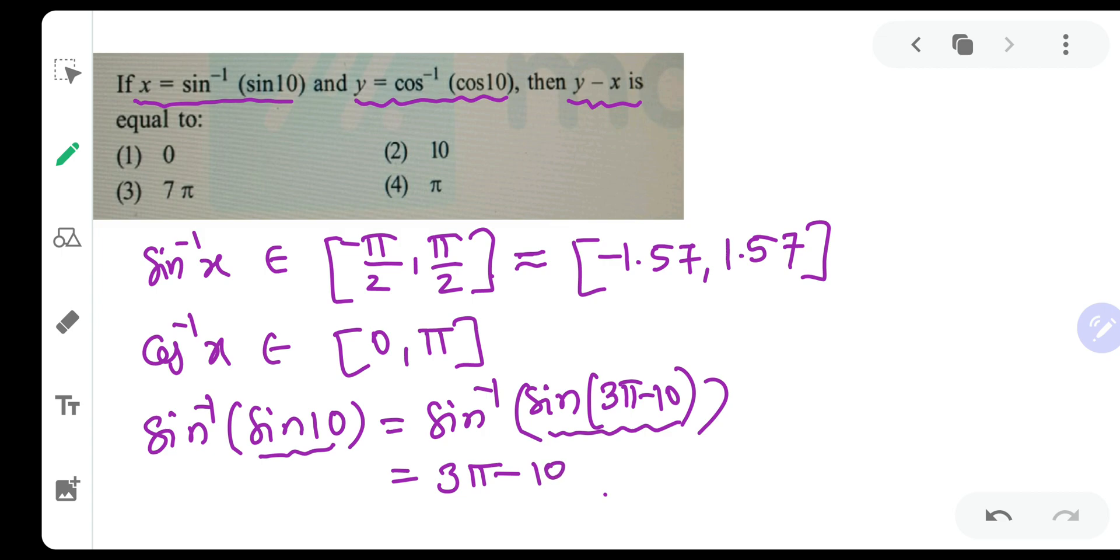Now check 3 pi minus 10 whether this lies in the range. Pi is approximately 3.14, so this will be approximately 9.42 minus 10 which will be approximately minus 0.58. Minus 0.58 definitely lies in the range of sin inverse of x. Therefore, this is totally right. Sin inverse of sin 10 is nothing but 3 pi minus 10.